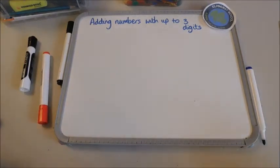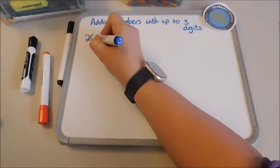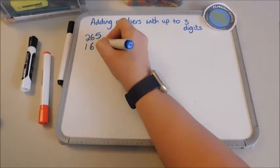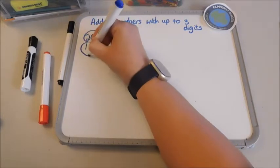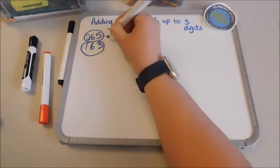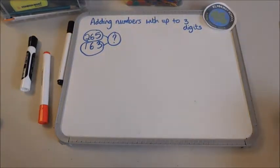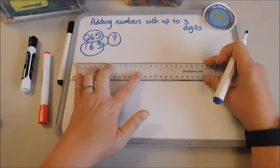I'm going to show you how to add numbers with up to three digits. Today we are going to look at adding 265 add 163. Those are my two numbers and at the moment I do not know what my answer is. The best way of starting this with your children is to use a place value grid.